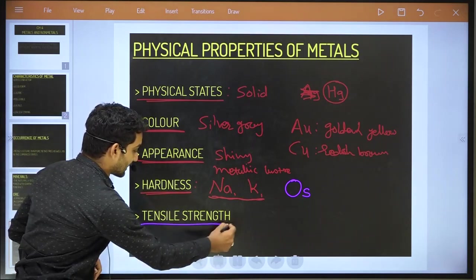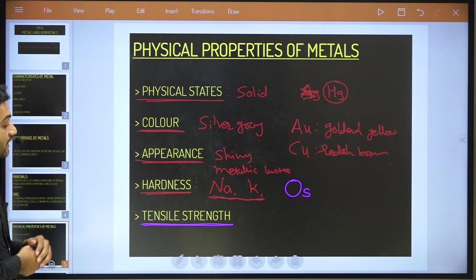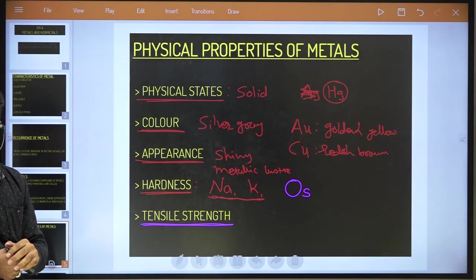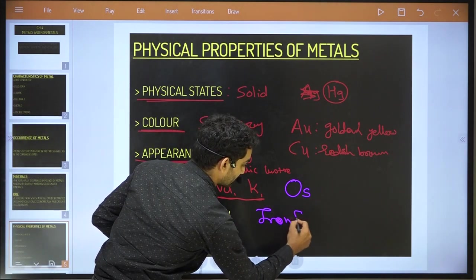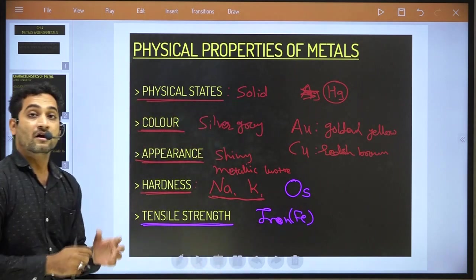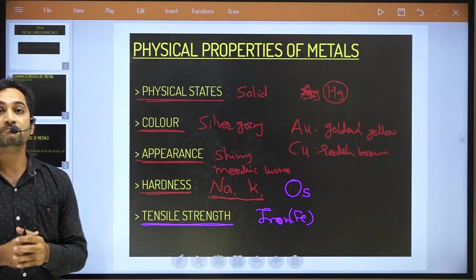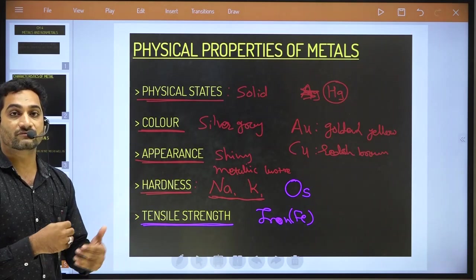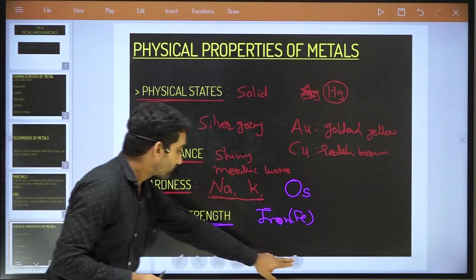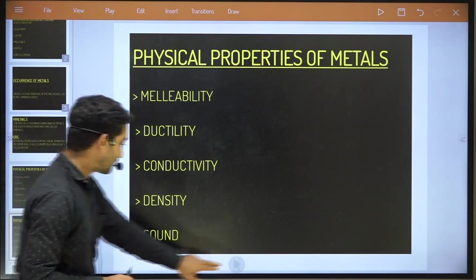Tensile strength of metal is very high. For example, iron (symbol Fe) can bear a lot of strength. That is why iron is used to build bridges, buildings, and for making instruments and vehicles.